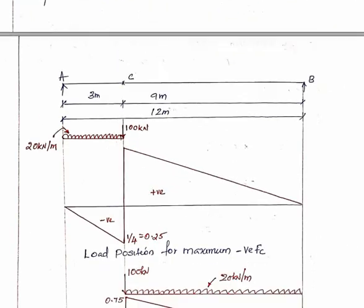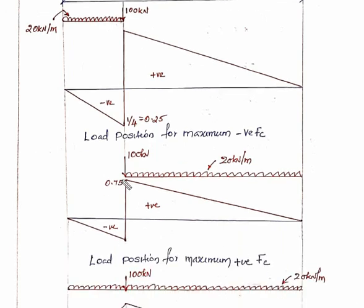For maximum positive shear force, the UDL should act on the appropriate length, and the 100 kN load should be placed at section C. The ordinate value is calculated as (L - z) divided by L.